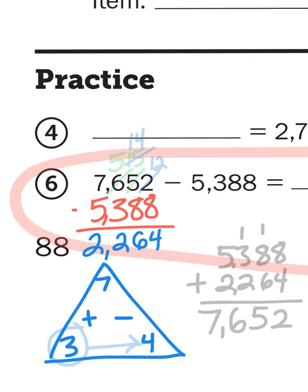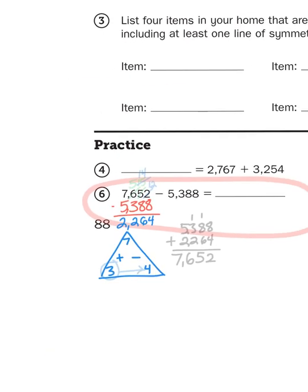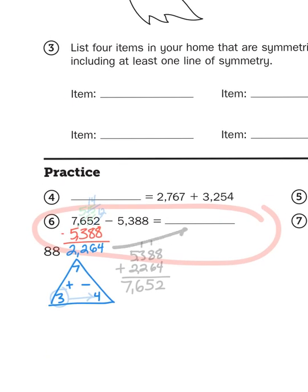So 7,652, it works. So you can be confident in your answer of 2,264 is the difference. Okay, if you have any questions about symmetry or geometry or subtraction, feel free to reach out to your math teacher. Otherwise, we will talk again soon friends, thanks.